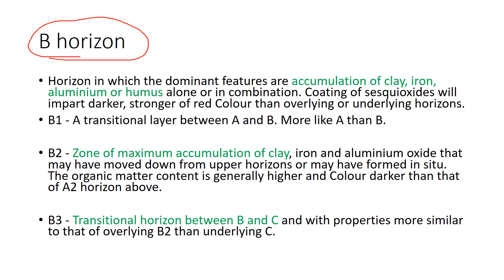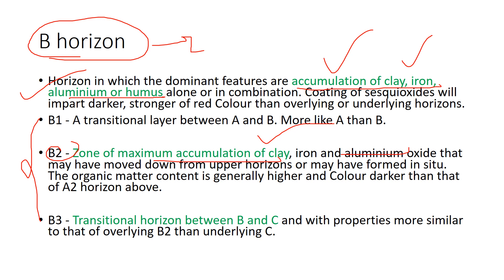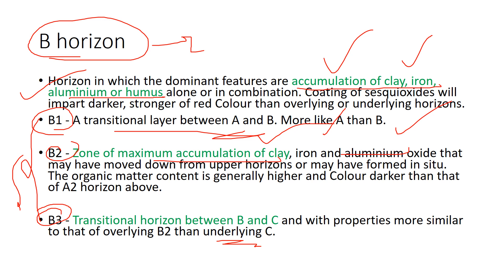The B horizon is the zone where accumulation of clay, iron, aluminium, or humus takes place — it is the region of maximum accumulation. It is classified into three types: B1 is a transitional layer between A and B with less activity; B2 is the zone of maximum accumulation of clay, iron, and aluminium oxides; and B3 is a transitional layer between B2 and the underlying C horizon.